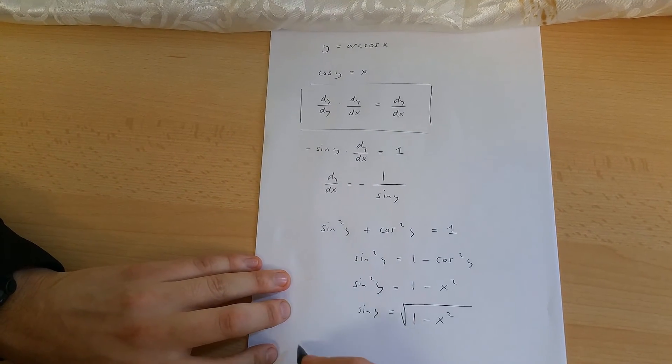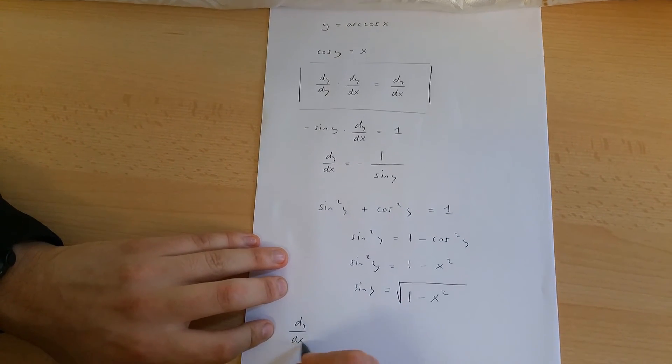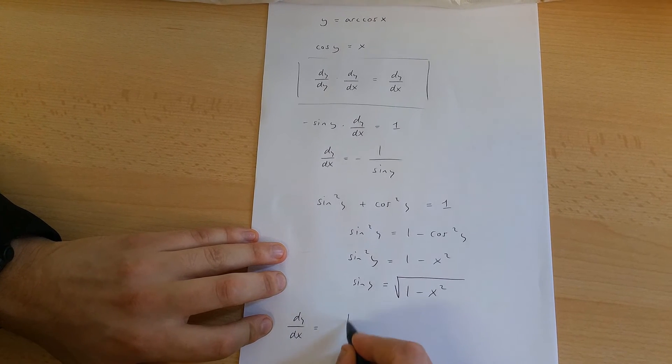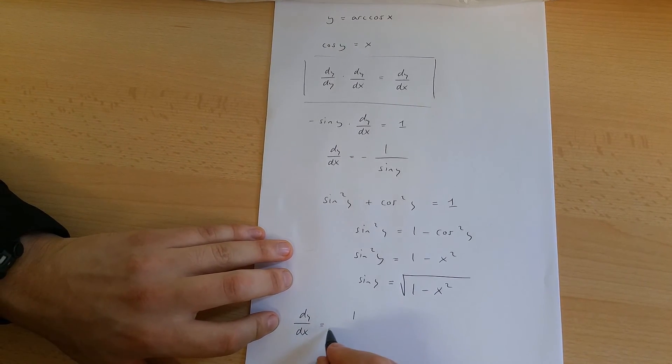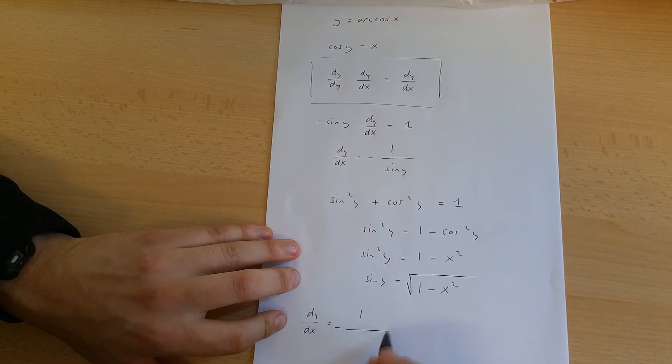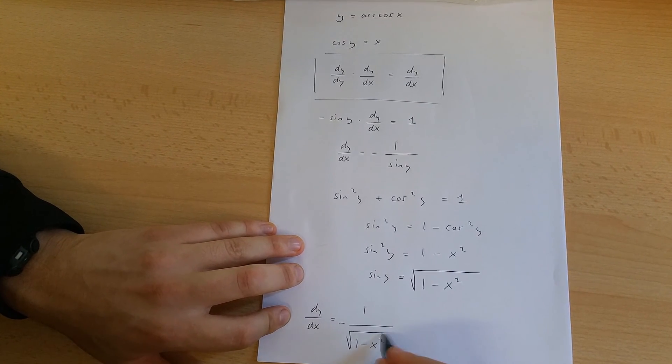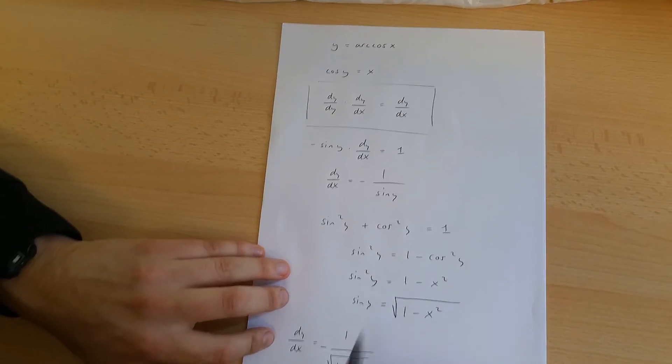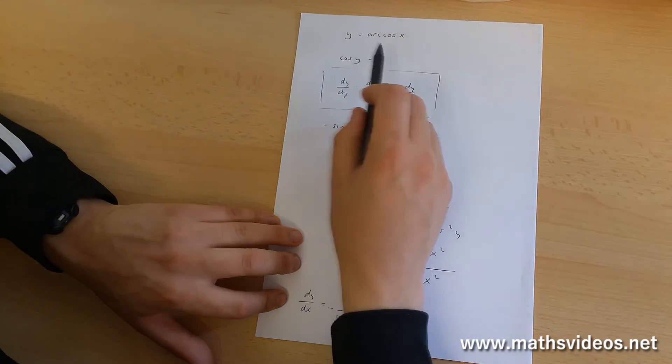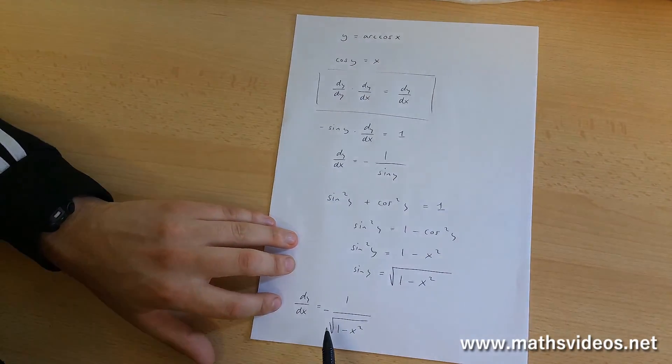If this is the case, dy over dx is equal to 1, sorry, minus 1 over the square root of 1 minus x squared. And this is y equals arc cos x differentiated.